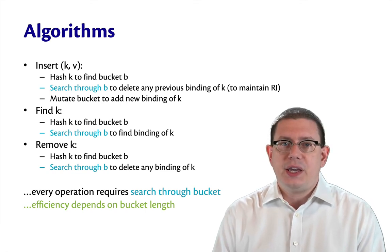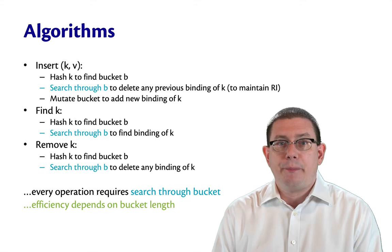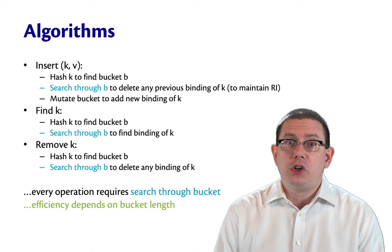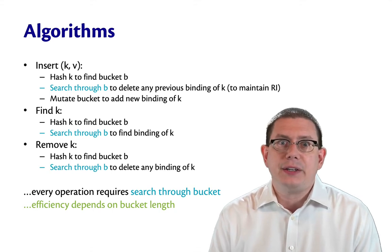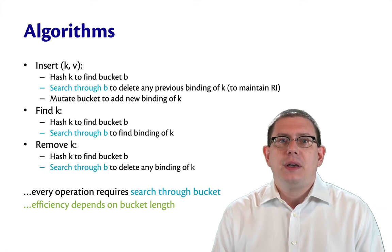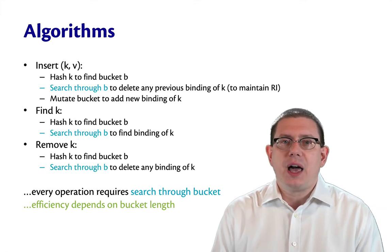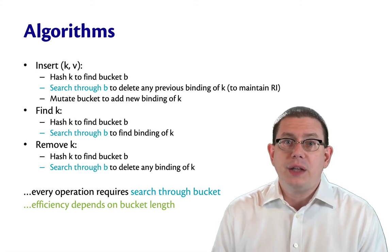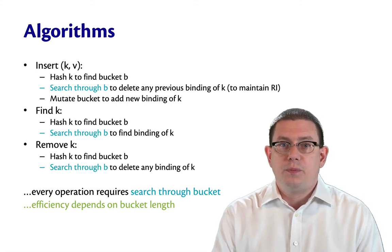So our efficiency here is going to depend on the bucket length. If the bucket length could somehow turn out to be a function of the number of bindings that have been added to the hash table, we're in trouble. But if the bucket length could only stay a constant, then we'd be good because we'd only be doing a constant amount of work to search through each bucket when we need to.